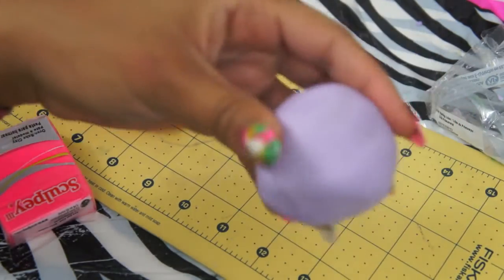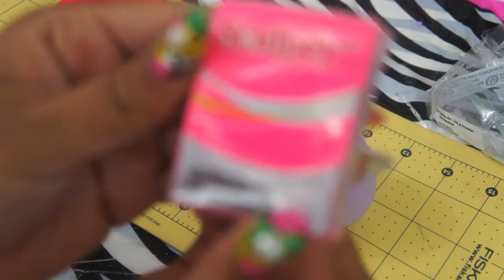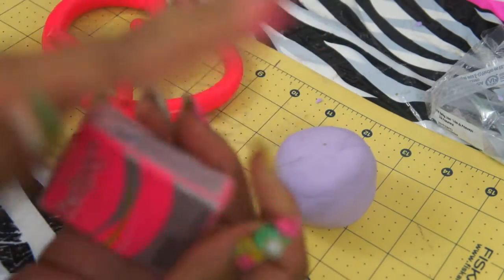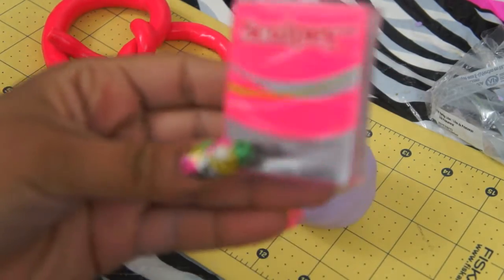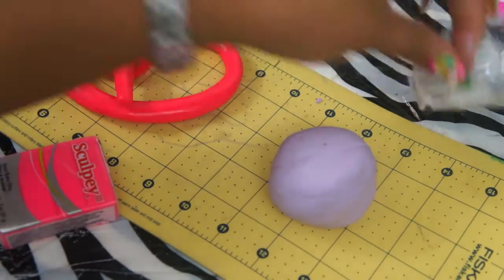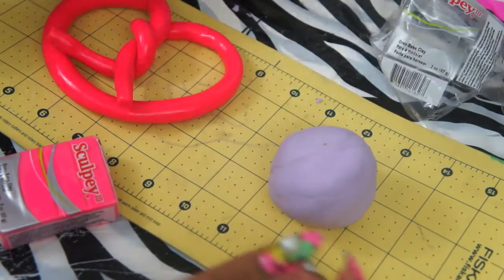Okay, I already went ahead and opened my Palmer's clay. When you buy it, it comes like this. There's four blocks in here. I just added them together. I actually used two packs of these and I chose the color lilac. I'll post a link below of where I got this clay from. Okay, so let's begin.